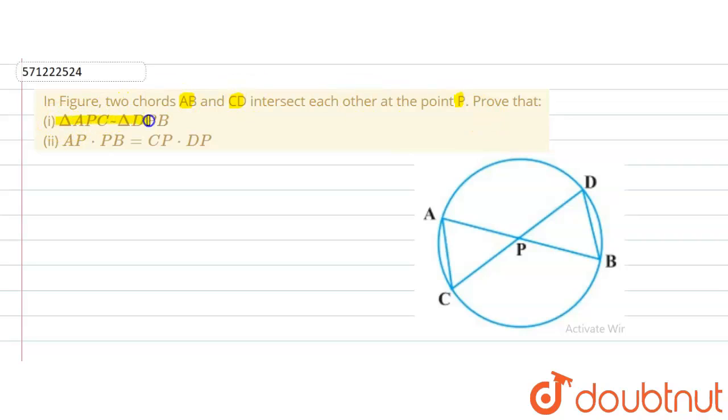Prove that triangle APC is similar to triangle DPB. We are required to prove that triangle APC is similar to triangle DPB, and also AP × PB = CP × DP.